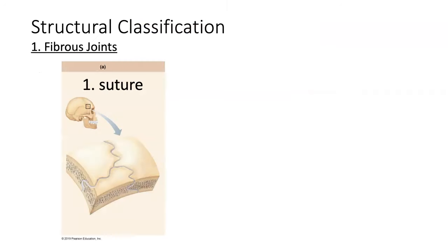There are three different structural classifications. One is a fibrous joint, where the two bones that are articulating have the gap between them filled with fibrous connective tissue. One example of a fibrous joint is a suture, which is the articulation found between skull bones where they grow together and fuse — tiny little fibers fill that gap.